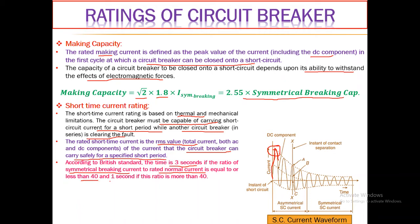If the ratio of symmetrical breaking current to rated normal current is greater than 40, the circuit breaker must operate after one second, otherwise it will cause serious damage to the contacts. According to British Standard, the circuit breaker must carry a short circuit current for three seconds if the ratio is ≤40, and must operate after one second if the ratio is greater than 40. If the backup circuit breaker fails to operate in time, it may damage the circuit breaker or other equipment in series.